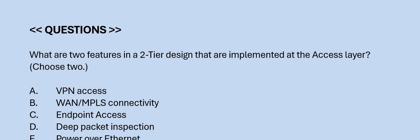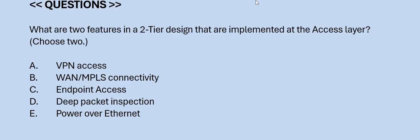Next question: What are the two features in a two-tier design that are implemented at the access layer? Choose two. Option A: VPN access. Option B: WAN MPLS connectivity. Option C: endpoint access. Option D: deep packet inspection. Option E: Power over Ethernet. The correct answers are Option C and E.